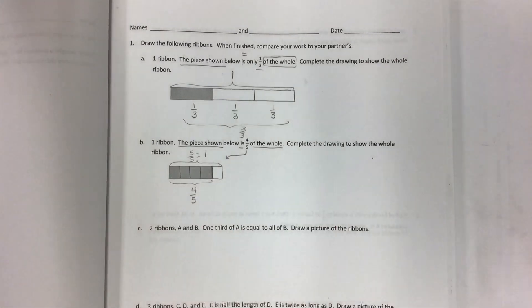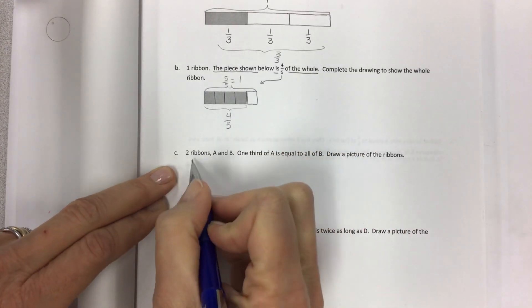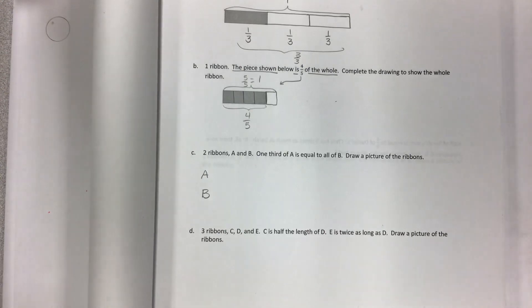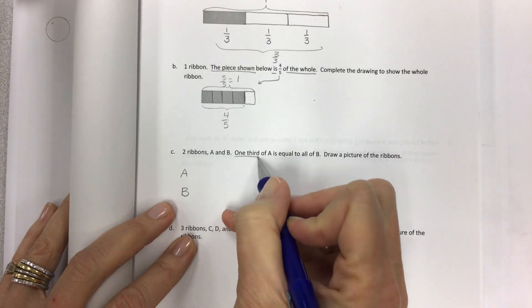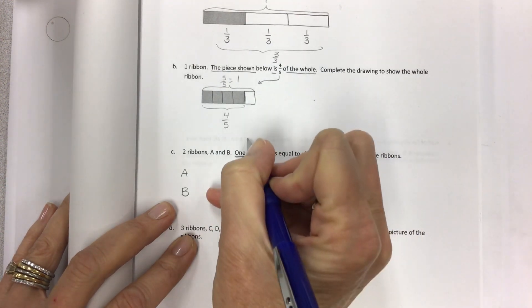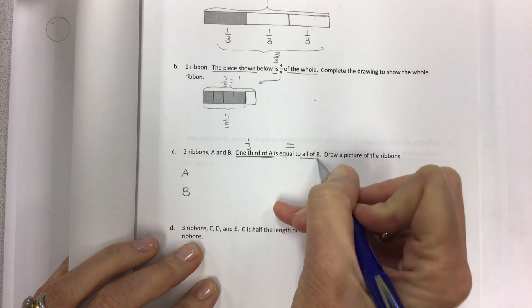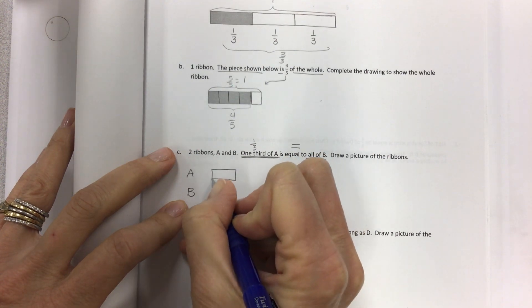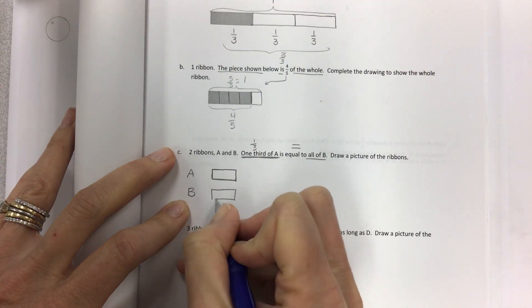Now on this one they don't give us any pictures and we're going to draw two ribbons and label them A and B. They give us some words and things that we have to associate with each other. One-third of A is equal to all of B.